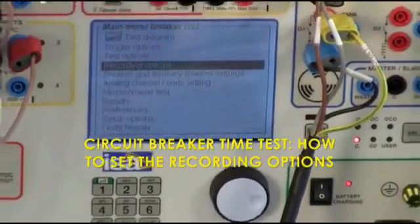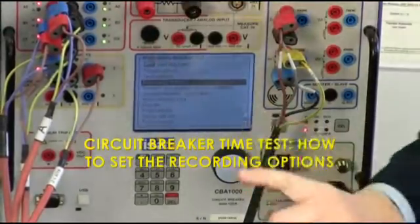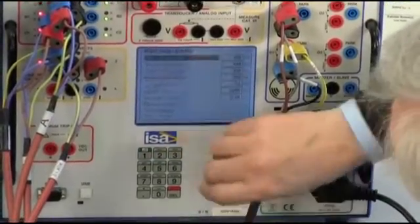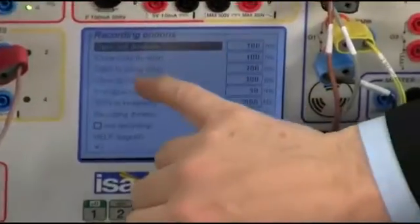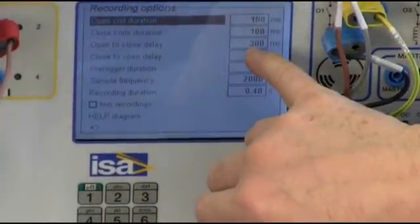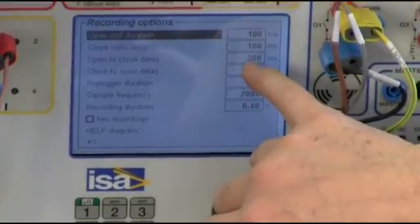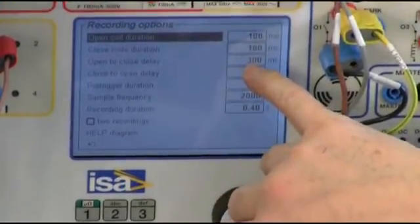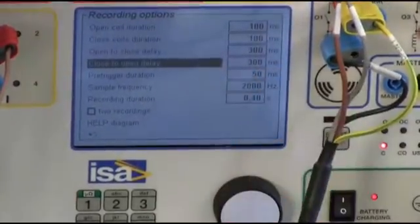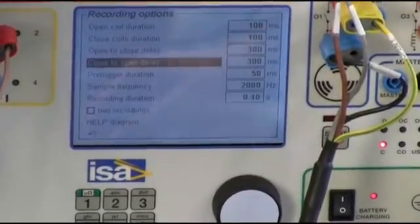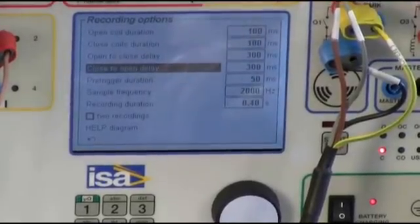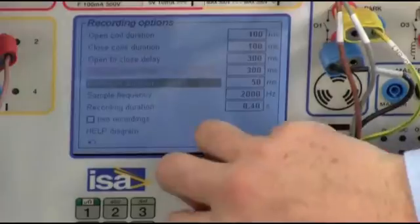Because I must be sure that the recording duration covers the complete sequence of open, closed, open. So, I go here and I see, open coil duration, closed coil duration. Open to close delay is 300 milliseconds, which corresponds to the standard re-close delay, and this is good. Close to open delay is 300 milliseconds, which is good because we can say this is the instance of closed onto fault.